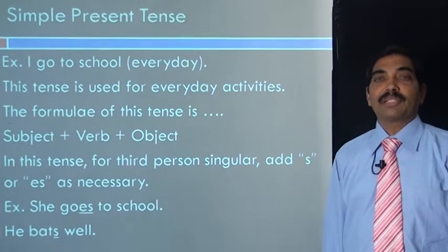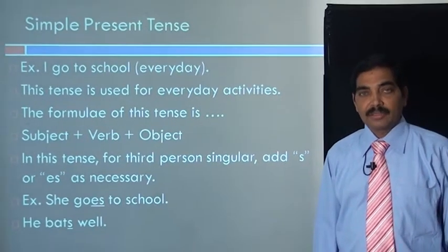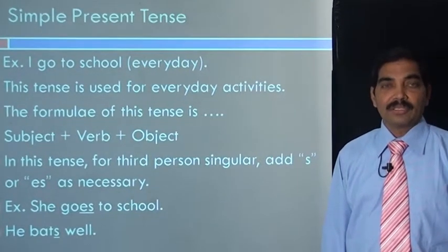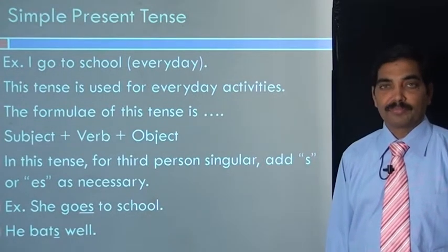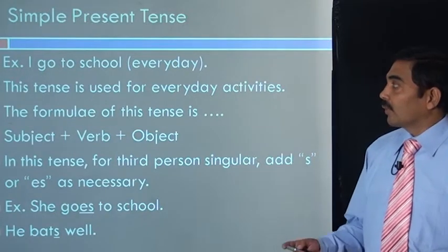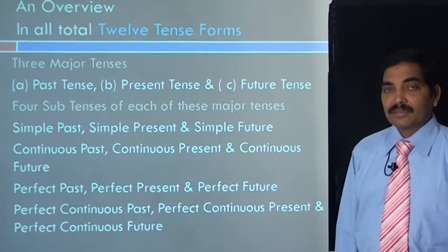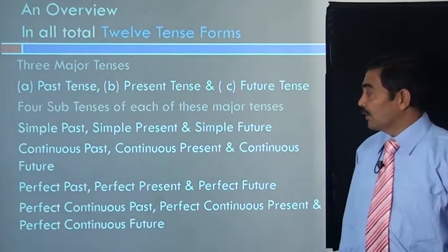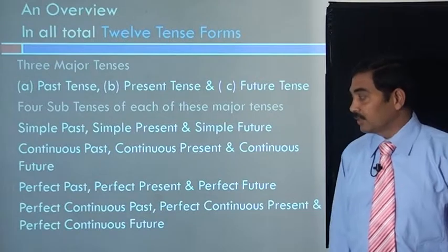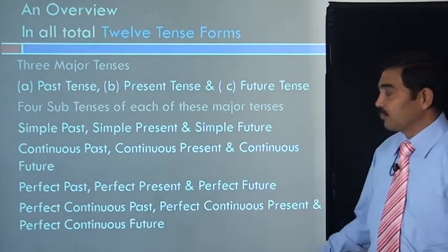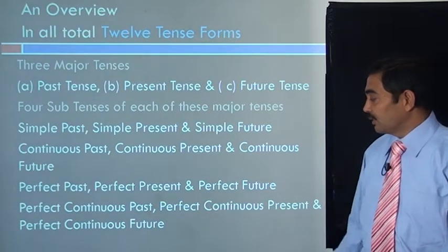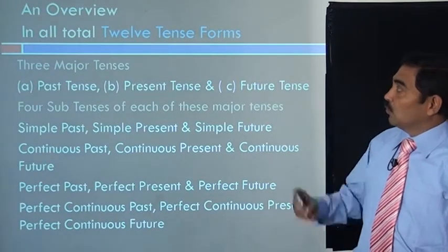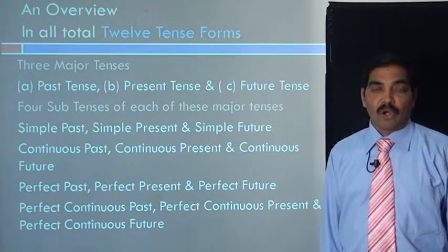There are three major tenses: past tense, present tense, and future tense. In these three major tenses, there are four sub-tenses in each of them. Likewise, simple past tense, simple present tense, simple future tense, continuous past tense, continuous present tense and continuous future tense, perfect past tense, perfect present tense and perfect future tense, perfect continuous past tense, perfect continuous present tense and perfect continuous future tense. So, in all, there are total twelve tense forms of three major tenses.